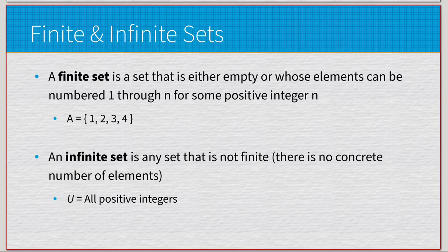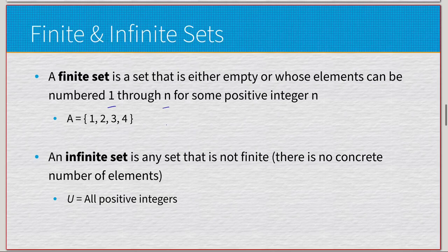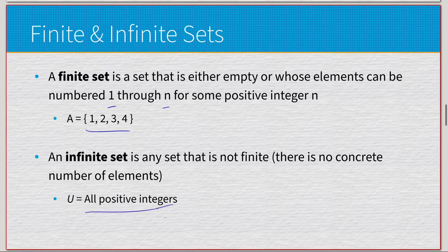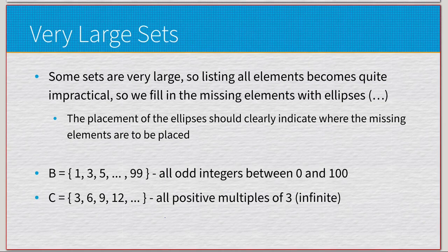We also have finite and infinite sets. A finite set is one that is either empty or whose elements can be numbered one through n for some positive integer n — so {1, 2, 3, 4} is a finite set. An infinite set is any set that is not finite; you'll usually see these as universal sets, like all positive integers. We also have very large sets that aren't infinite but are incomprehensibly large, like a set with a trillion elements.